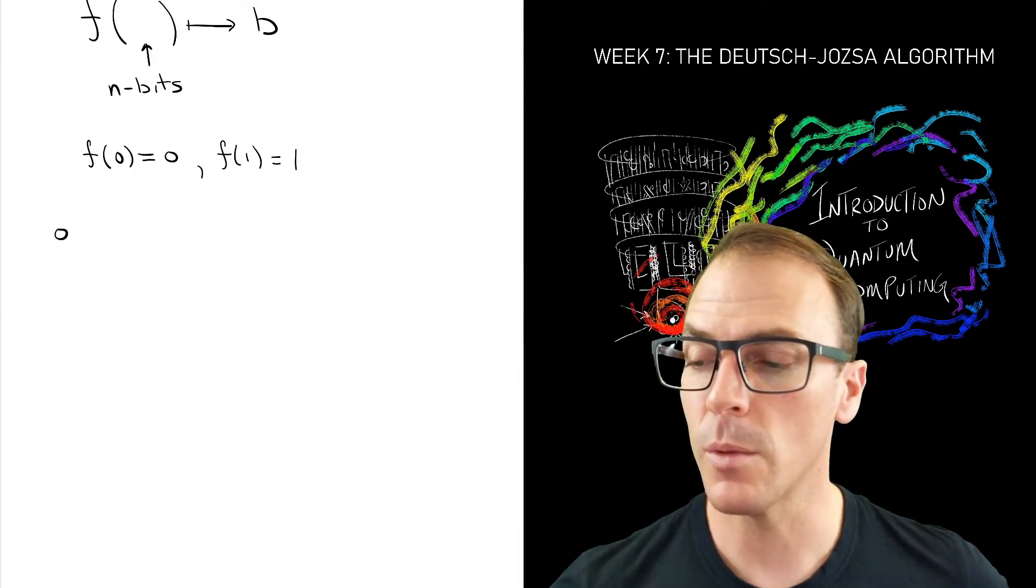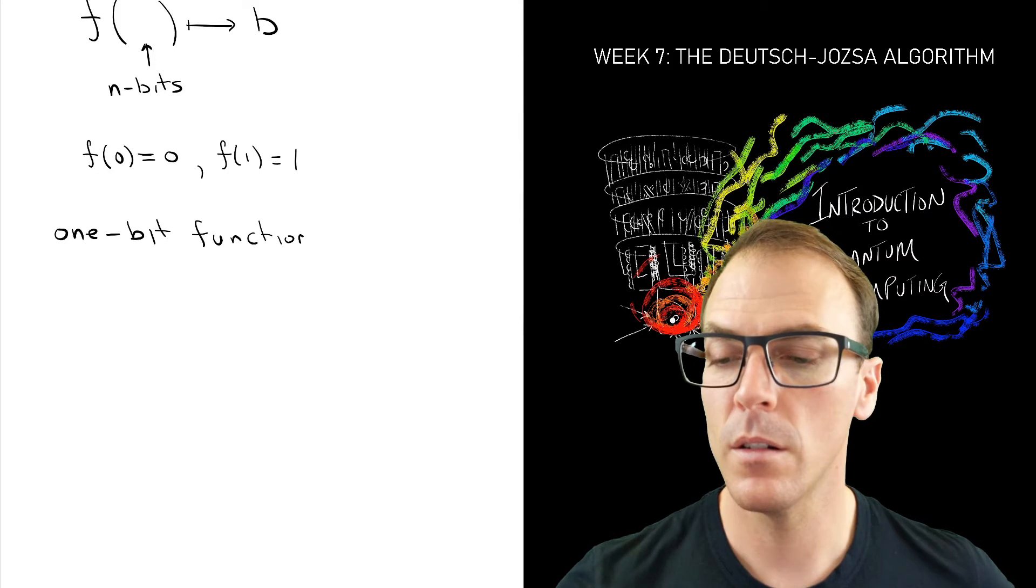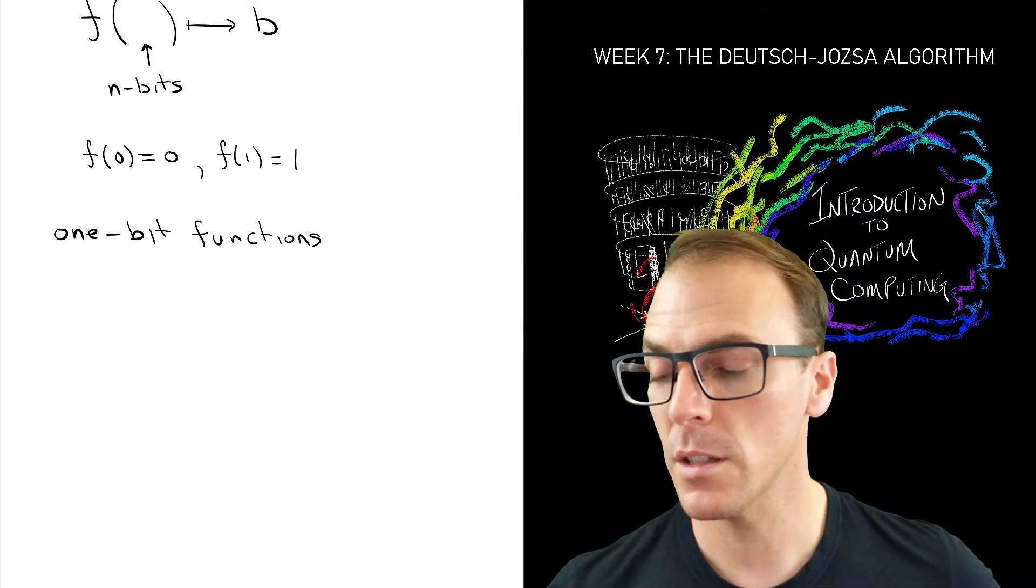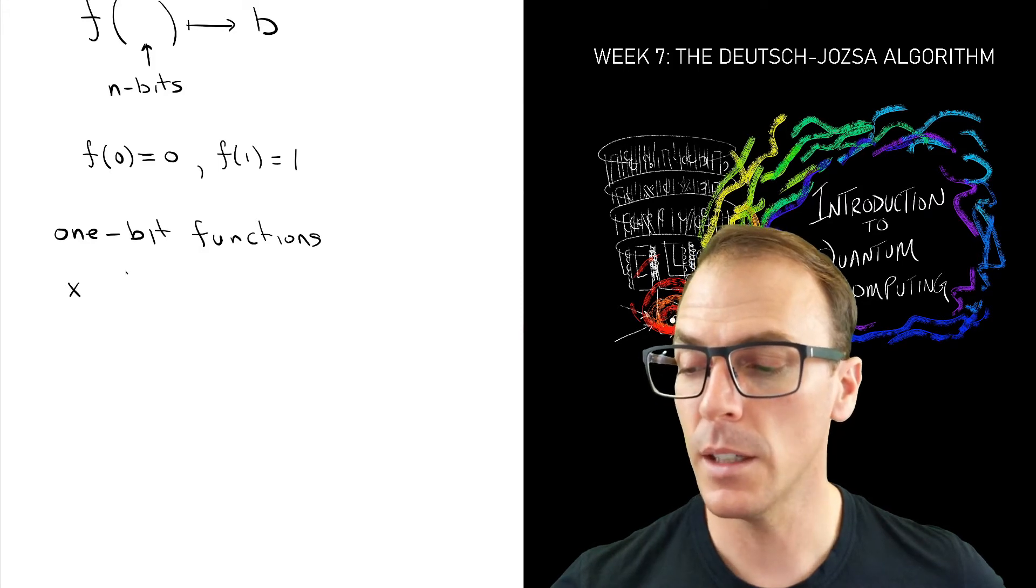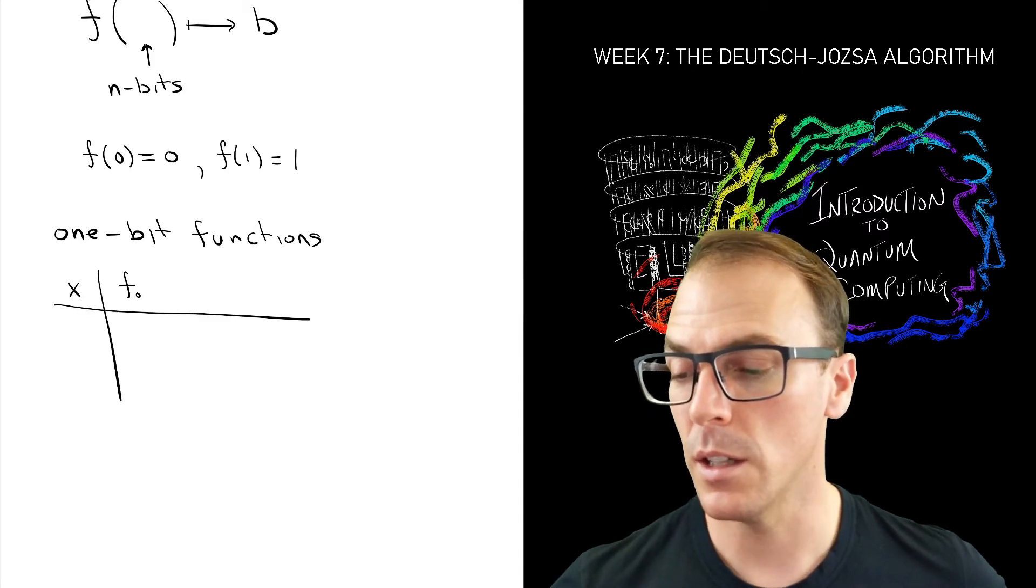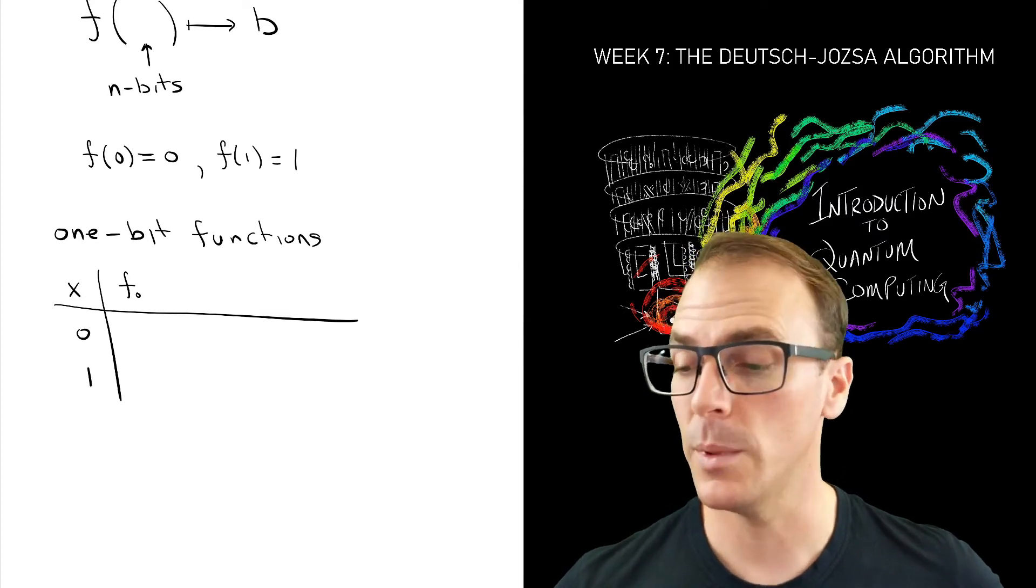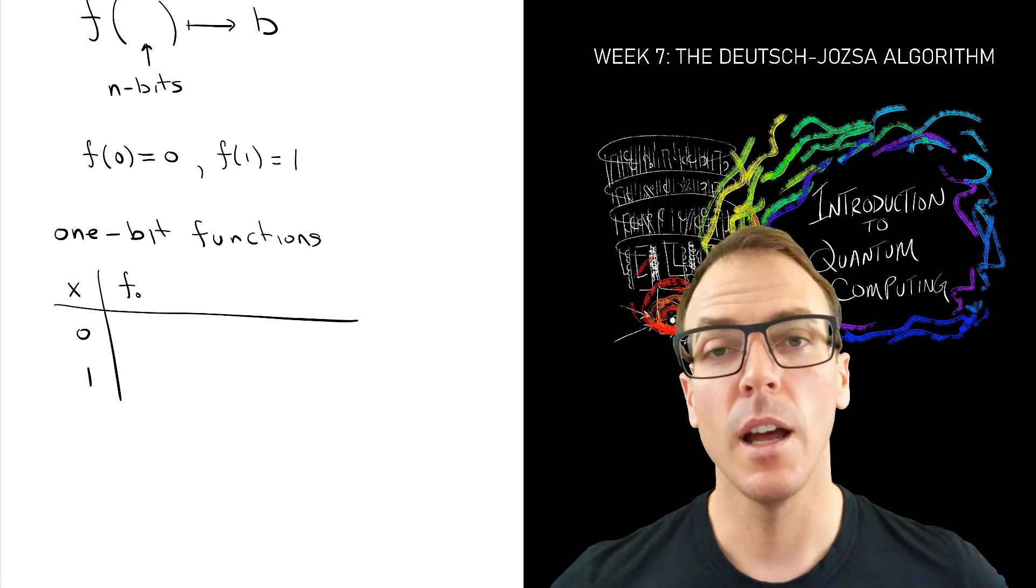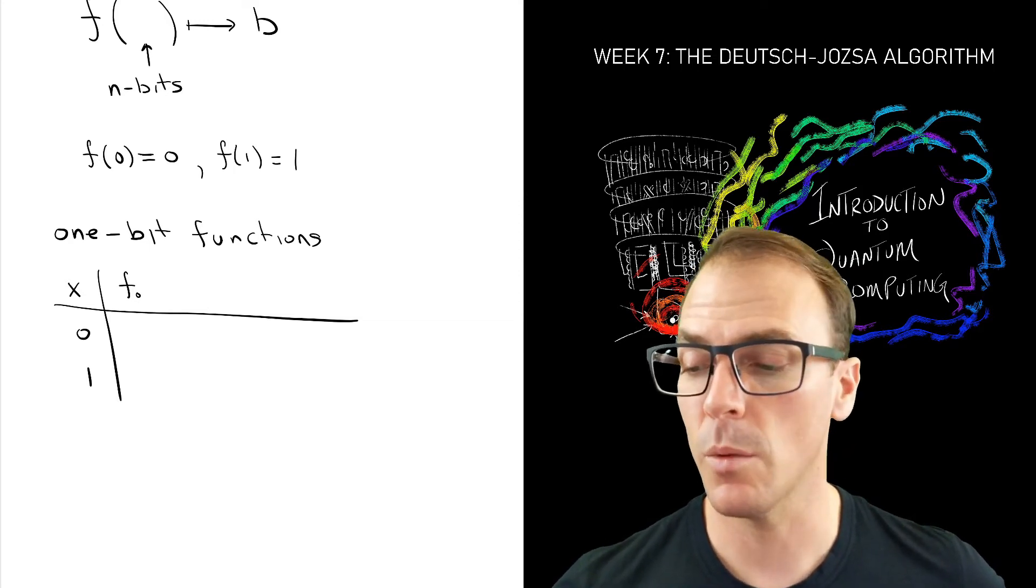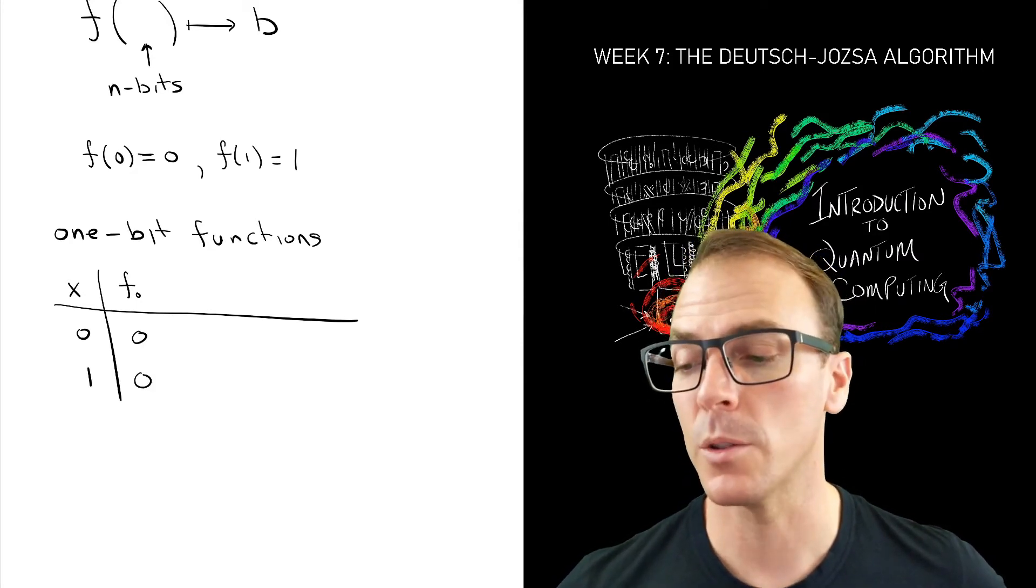So let's start with one bit Boolean functions. Let's say the input bit is x, and then let's start coming up with functions. So let's say the first one is f0. So the input can be 0 or it can be 1. There's only two possibilities. Let's start simple and say call f sub 0, the one that produces 0 for both of those possible inputs.